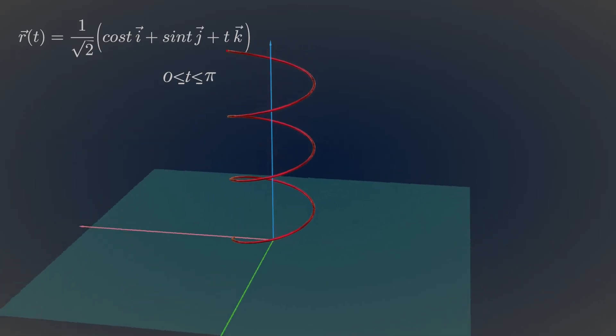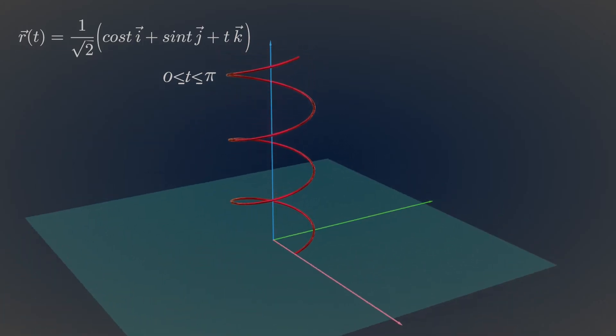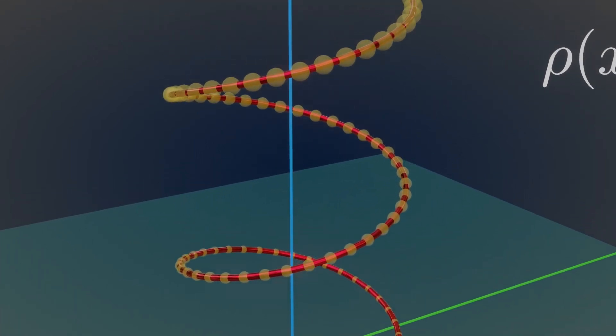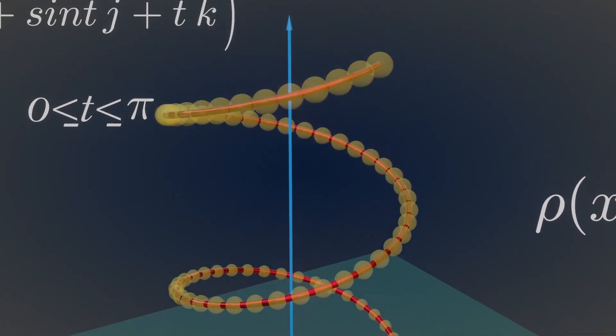Consider this spiral curve as a spring. Let's say the density of this spring varies in space according to this scalar function. Just notice that the density of this spring increases as the spring spirals up the z-axis.